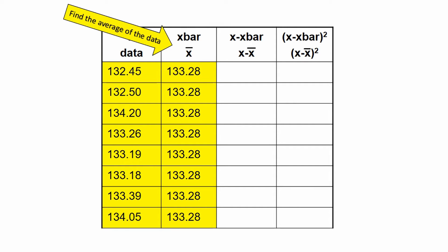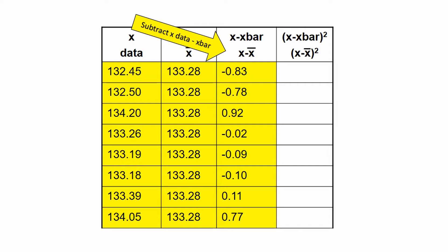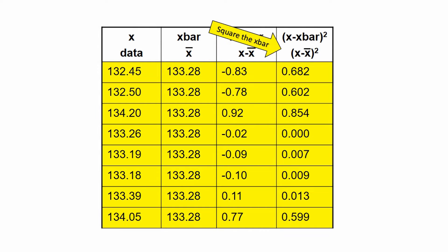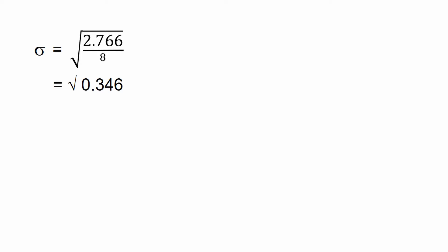We get the average of the length, which is the X bar. We get the difference between the X data and the X bar. We then square the difference of X minus X bar. After squaring, they are all added up to get the summation. The summation will be divided by the number of available data or the population.